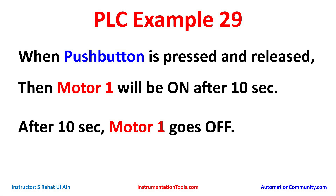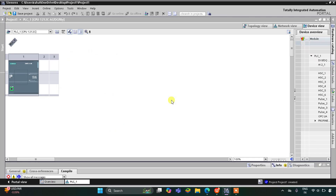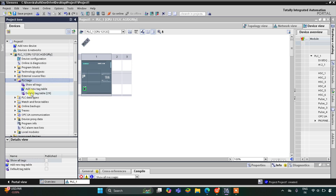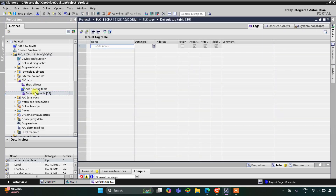When push button is pressed and released, Motor 1 gets on after 10 seconds and for 10 seconds. For the push button we will use a normally open contact. We will also use memory bits and timers like T-ON and TP — that is, on-delay timer and pulse timer. Let's move to TIA Portal where we will draw a ladder diagram for this example. This is the interface of TIA Portal version 16.